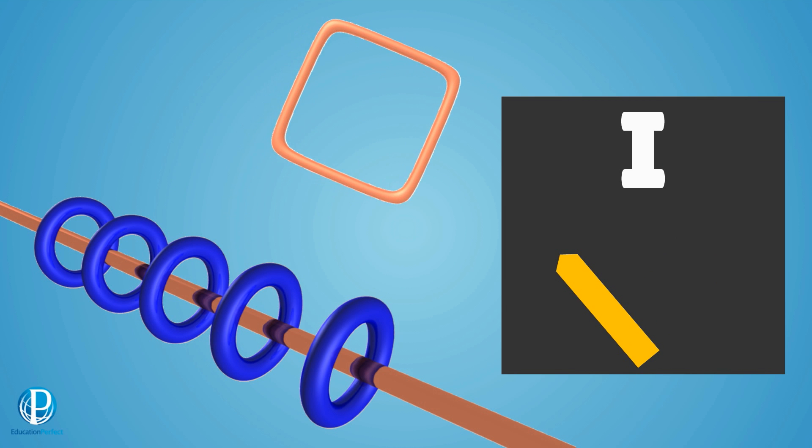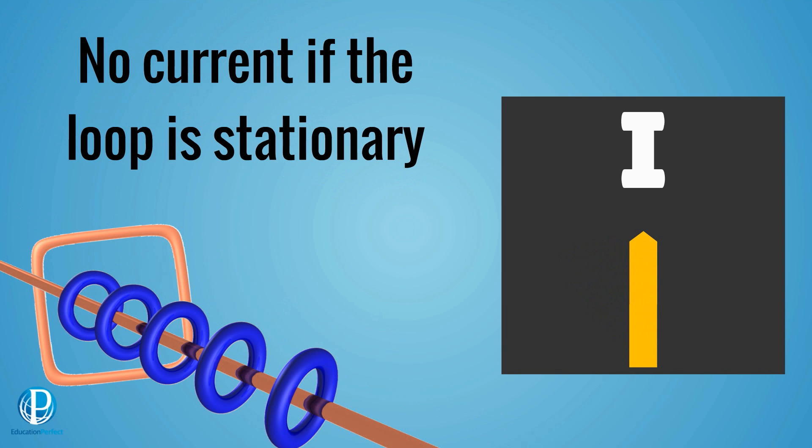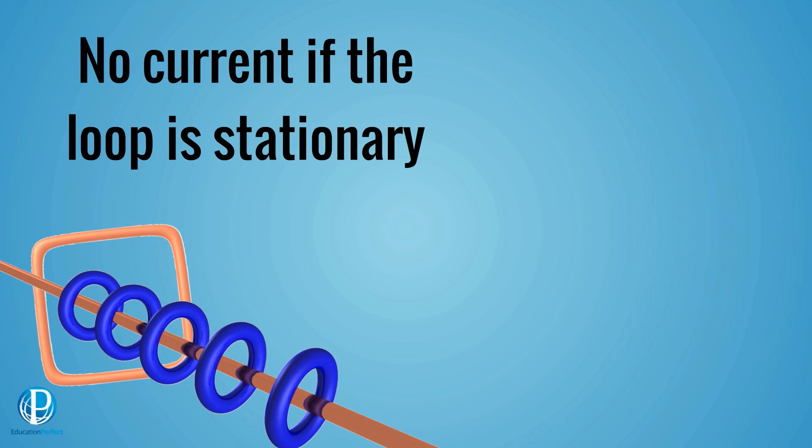I take the loop out again, and the galvanometer moves again. But if I just hold the loop still like this, there is no current detected at all. My instrument doesn't move. It's only when I move the wire into or out of the field that I get a response.